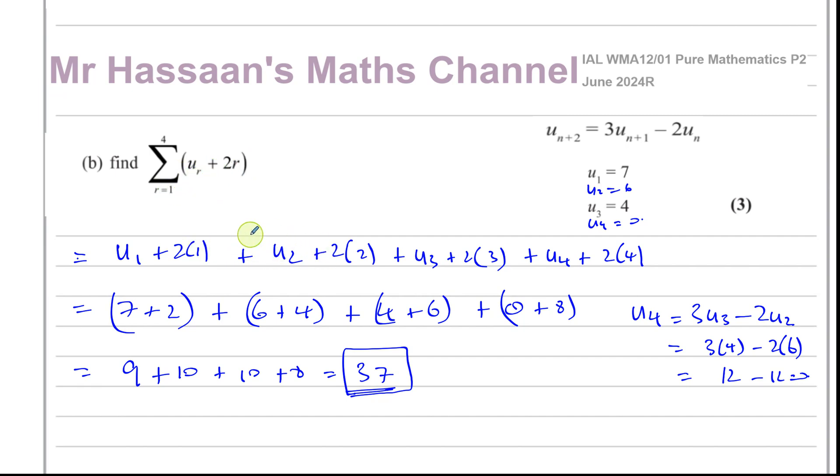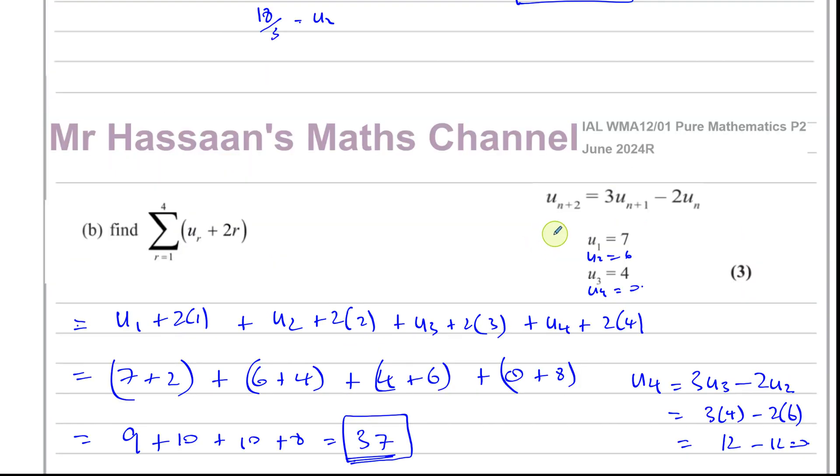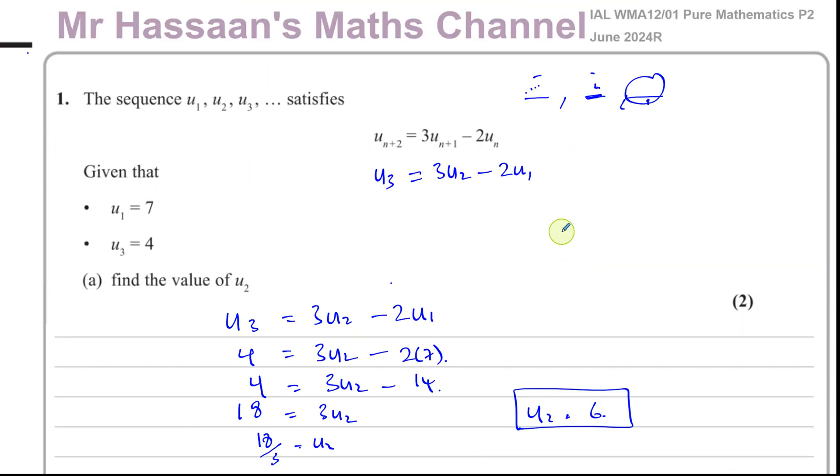So for the first term, r would be 1. Second term, we'd put r equals 2 into here. Third term, and so on. So that's how we answer this question, and that completes question number 1 from this question here, which is all about series and sequences. This is specifically about recurrence relationships.